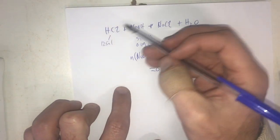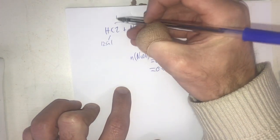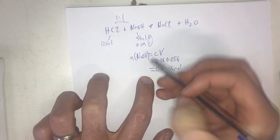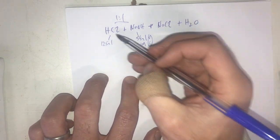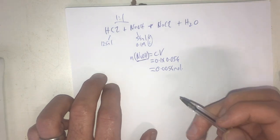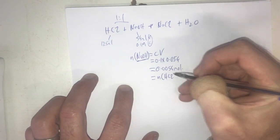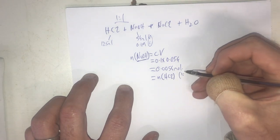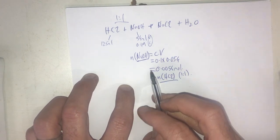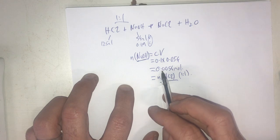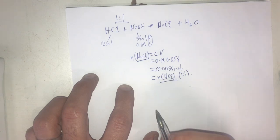Now what this equation here says is the ratio. It's a one-to-one ratio. So the number of moles of sodium hydroxide in this reaction is going to be equal to the number of moles of hydrochloric acid. So that means that's going to be equal to number of moles of hydrochloric acid because it's one-to-one. Okay so therefore the number of moles of hydrochloric acid is 0.0054 as well.